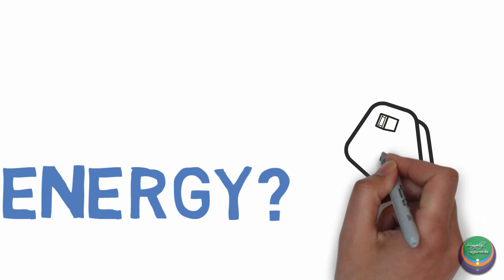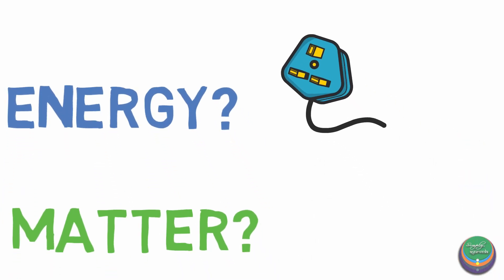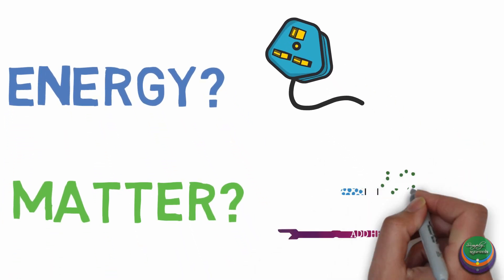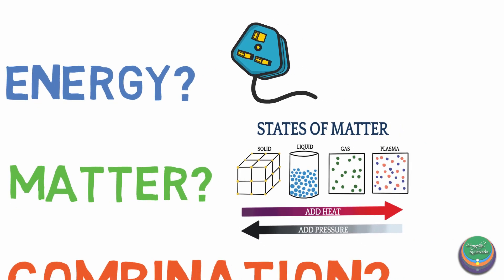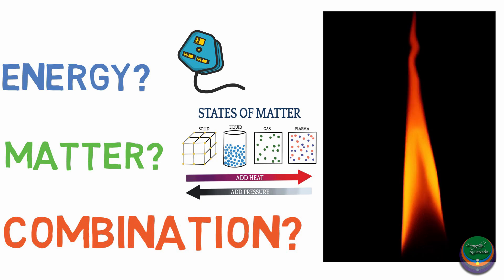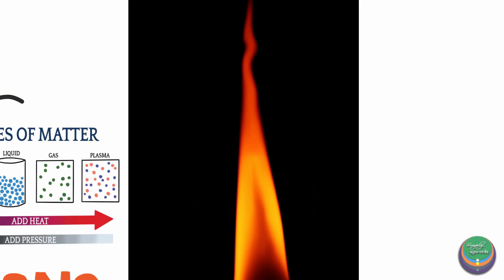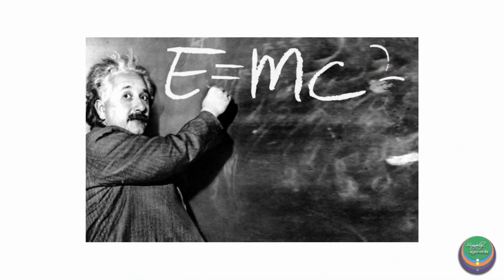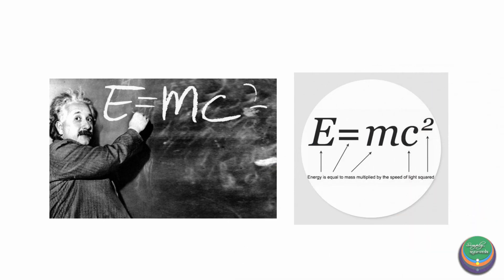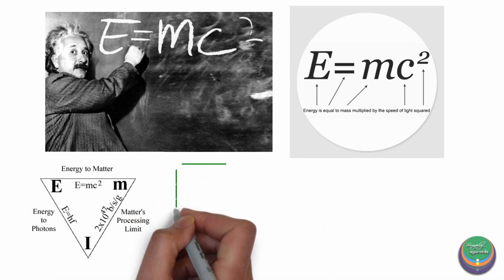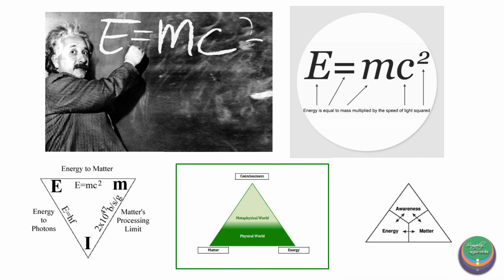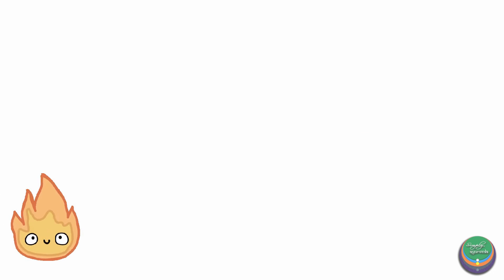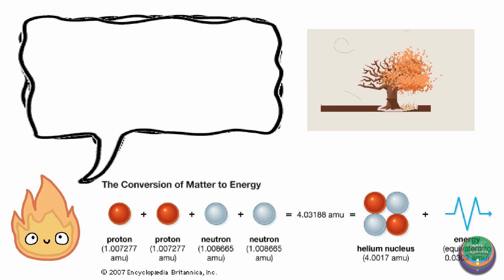Energy cannot usually be visualized but can be felt or measured. Matter, on the other hand, can be visualized and exists in a bound physical form. Agni is the only entity which can be visualized despite not being bound by a physical form. Einstein's famous equation E=mc² also states that energy and matter are two sides of the same coin — energy converts into matter and matter into energy. So we can boldly say that Agni is the factor of transformation responsible for the conversion of matter into energy and energy into matter.